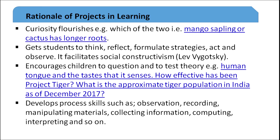What is the rationale for projects? Curiosity flourishes — for example, which of the two, a mango sapling or a cactus, has longer roots? Children don't know — let them find out. Get students to think and reflect; they formulate their own strategies, learn to act, learn to observe. In other words, it facilitates social constructivism. It is very important to get children to use higher order cognitive processes, moving beyond lower order thinking.